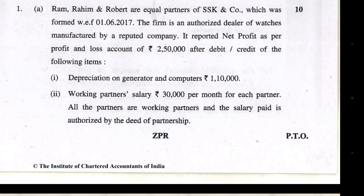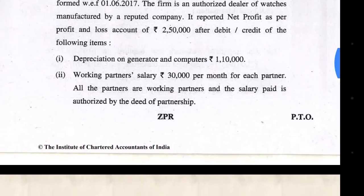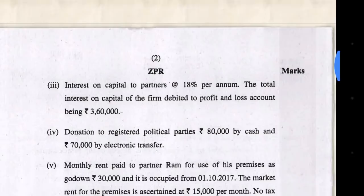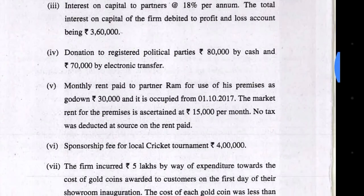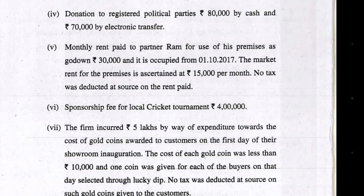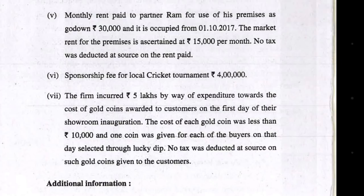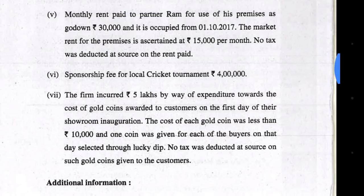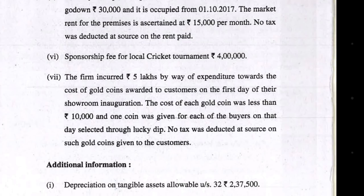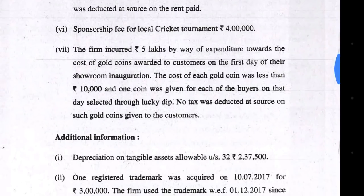First, let's discuss Question 1 Part A. There was a partnership firm formed on 1st June 2017, so the time period was 10 months. Profit before tax is given at two lakh rupees. Depreciation will be added back. Working partners' salary — no treatment needed. Interest on capital to partners is allowed at 12%. Reverse calculation was required. Donation to related party is not a business expenditure, so it is disallowed, but you get the benefit in Chapter 6. TDS had no effect because the one lakh eighty thousand threshold was not crossed.